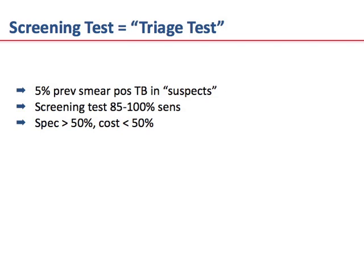Because of the cost of GeneXpert, it would be important to have a screening test to enrich TB suspects for those more likely to have confirmable TB. The cost of the cartridge is $10, even at carefully negotiated prices, and the cost per test is $14 to $17. A screening test, for example in TB suspects with a 5% a priori prevalence of actual tuberculosis, which was 85% to 100% sensitive, comparable to GeneXpert, would have to be at least 50% specific and cost less than half of GeneXpert to be cost effective.